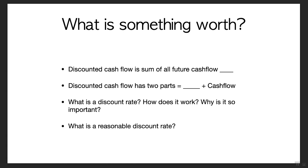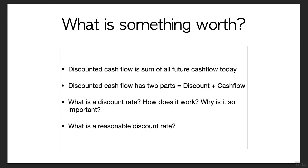Discounted cashflow is the sum of all future cashflows today. That means you're taking everything this company is going to earn in the future and evaluating what that is worth today. Discounted cashflow has two parts: the discounting factor and the cashflow part. Cashflow is simply how much money the company is going to make year after year. But you might be wondering — what is the discount rate, how does it work, why is it so important, and what is a reasonable discount rate?